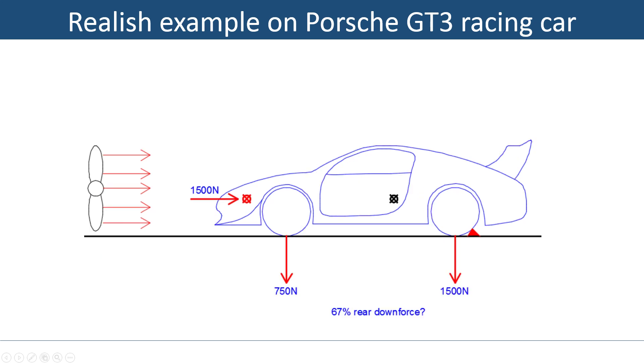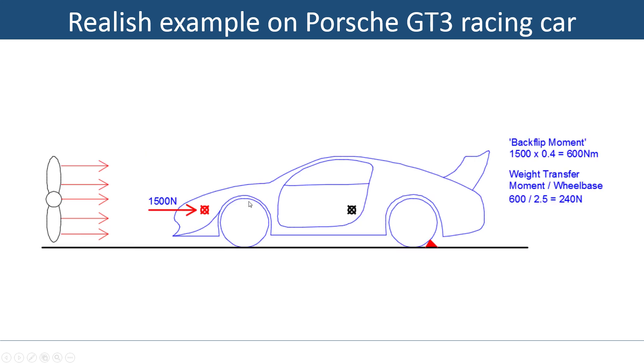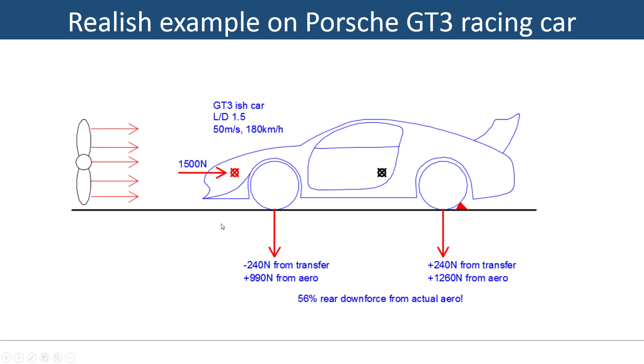Now let's say we get this result from the wind tunnel. It's a GT3 car, so it's got a lift-to-drag ratio of about 1.5, so with 1500 newtons of drag we get a total of 2250 newtons of downforce. Let's say these are the numbers we get from the wind tunnel scales - 750 on the front and 1500 on the rear. That would seem like we get 67% rear downforce in this case. But we calculated we get weight transfer from this drag force applying above the ground, reacted at the ground here, creating a backflip moment.